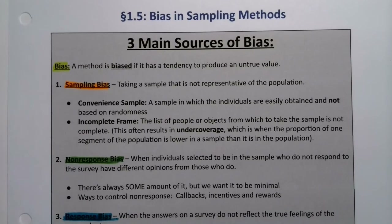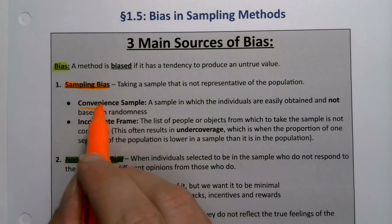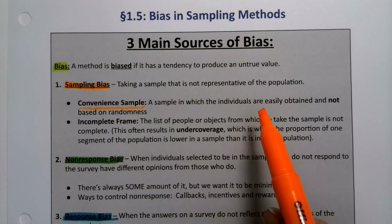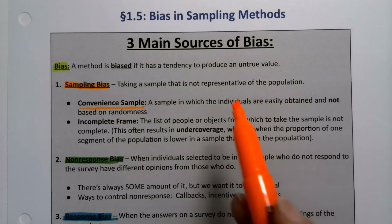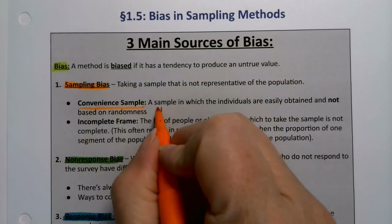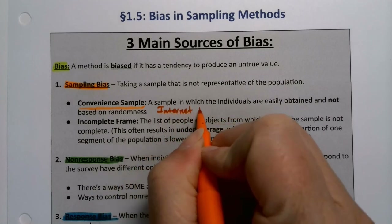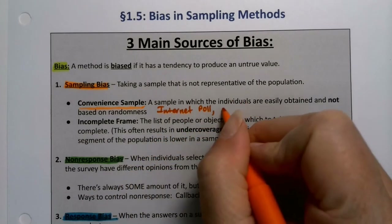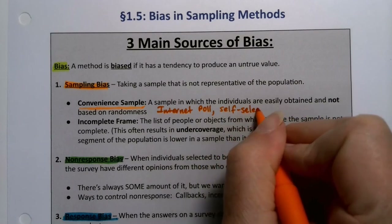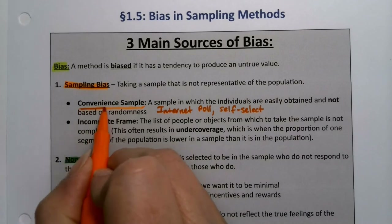Let's go back to sampling bias. The convenient sample is the most common type. It's when you're just taking a sample from easily obtained people, or people that self-select. So anything that's an internet poll, or anything where people call in and self-select themselves to be part of the group — that's a convenient sample.